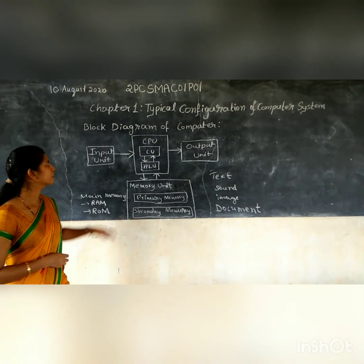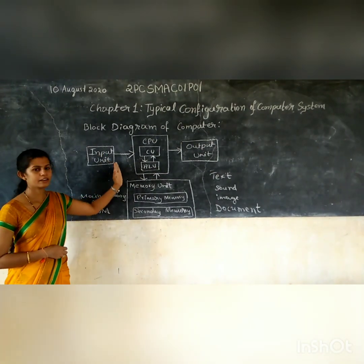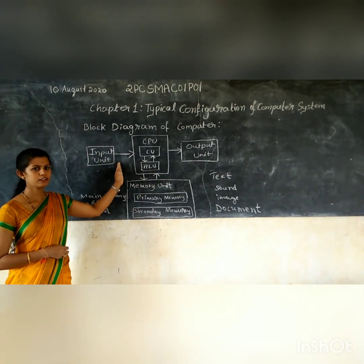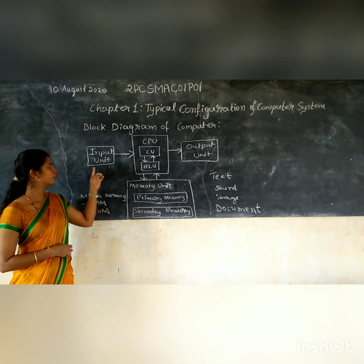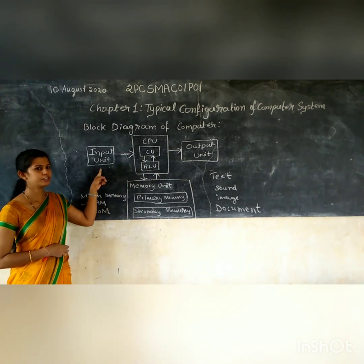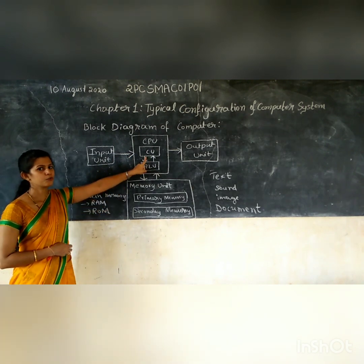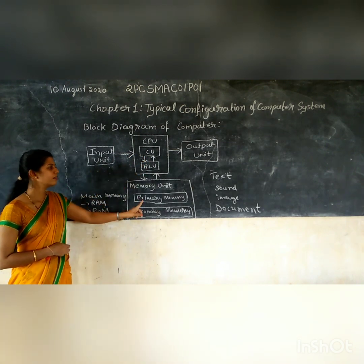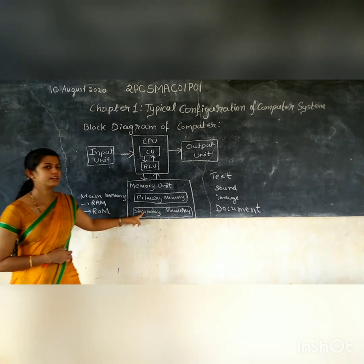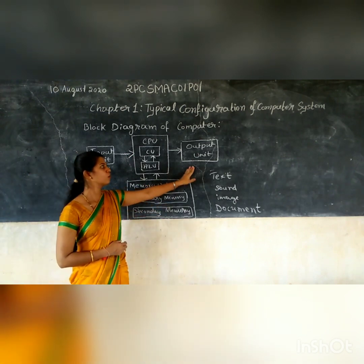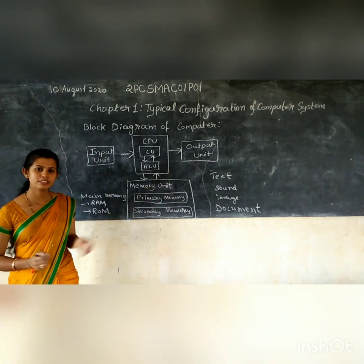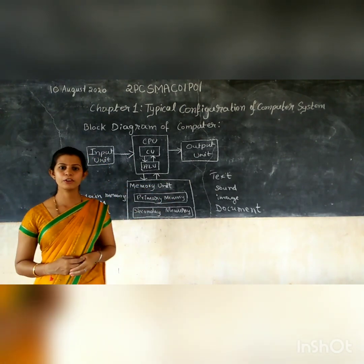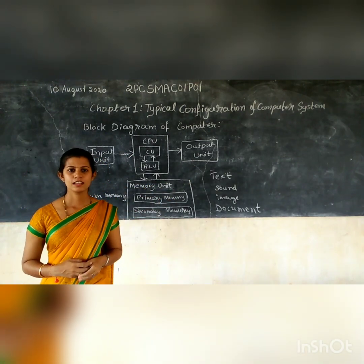So this is about the block diagram of a computer, which contains four units: input unit, central processing unit, memory unit, and output unit, which we have studied in the previous section.